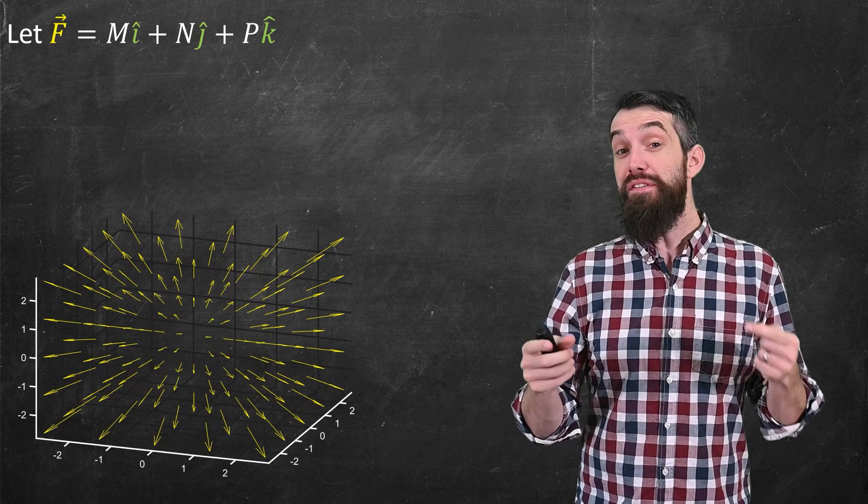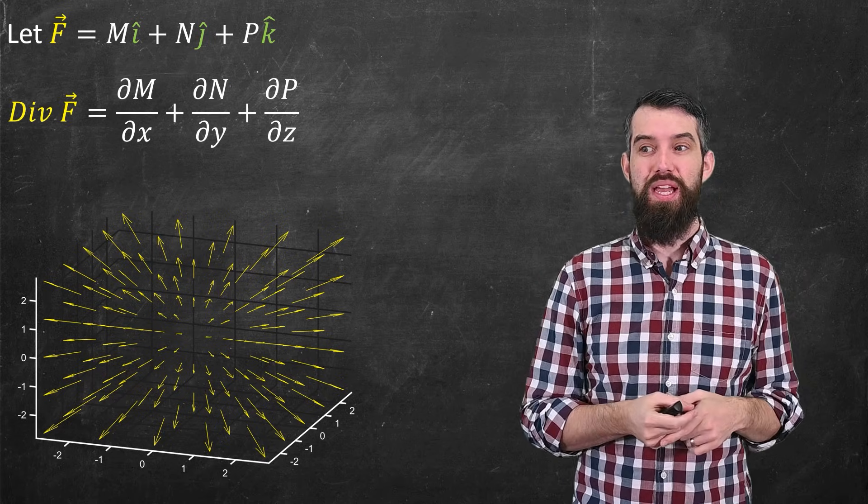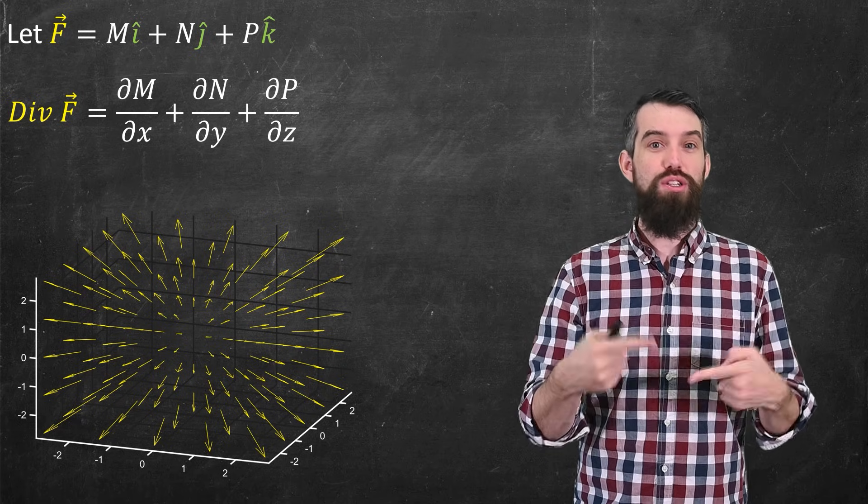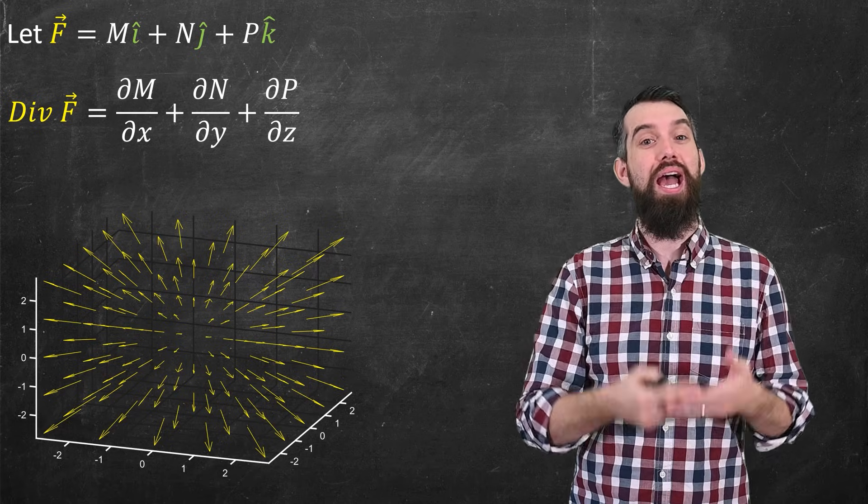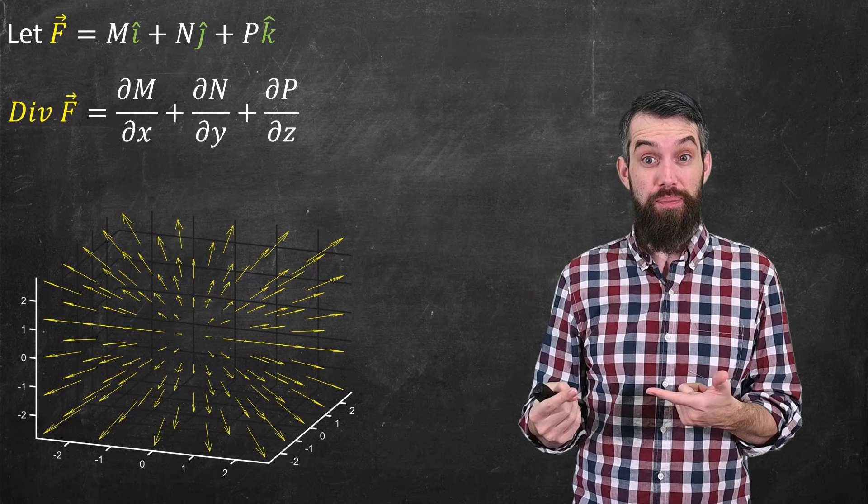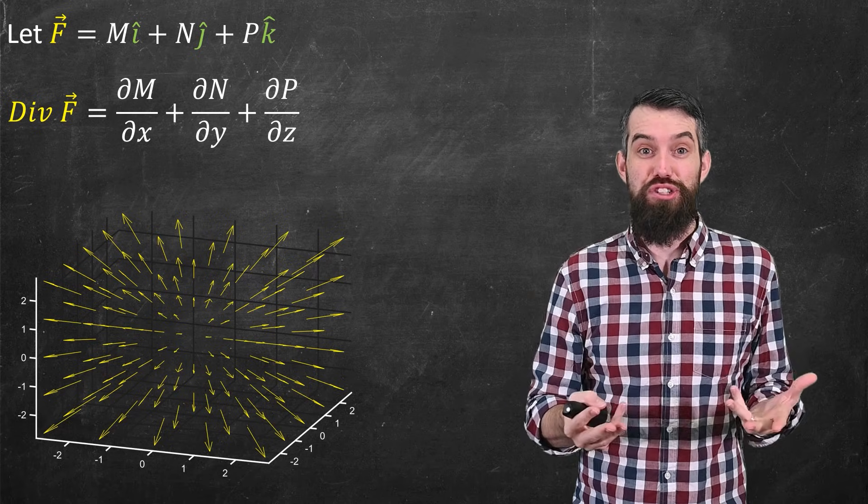Then the divergence is defined to be the sum of the partial derivative of the first component m with respect to x, the second n with respect to y, and p with respect to z. That gives the divergence.